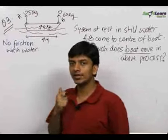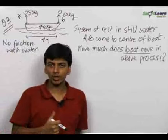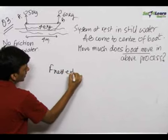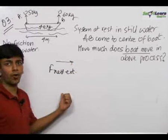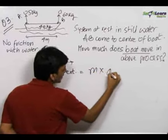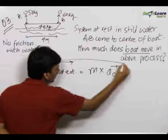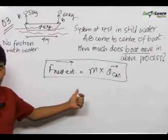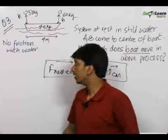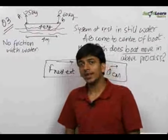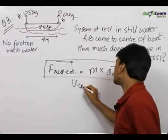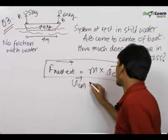When the net external force is 0, the acceleration of the centre of mass is 0, because the formula F_net_external equals total mass times acceleration of centre of mass always holds. So when acceleration of centre of mass is 0, the velocity of centre of mass will never change. Initially everything was at rest, so the initial velocity of centre of mass, u_cm, equals 0.